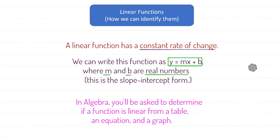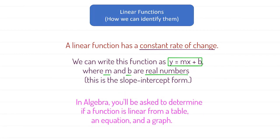Not every linear function has to be written in that form — we don't have to write every linear function like that. But if you can write it like that, then we definitely know that it's linear. This is called the slope-intercept form. We'll be getting to that probably in the next section, if not the one after — definitely in this chapter. It's really, really important, something you'll see in calculus as well.